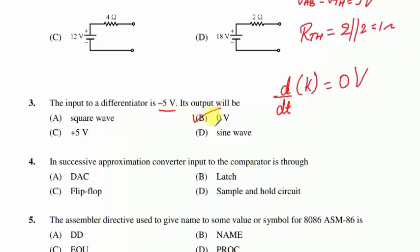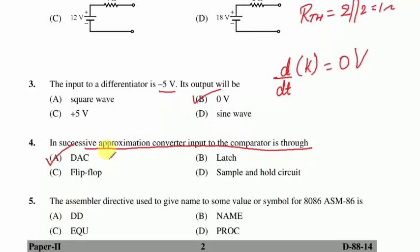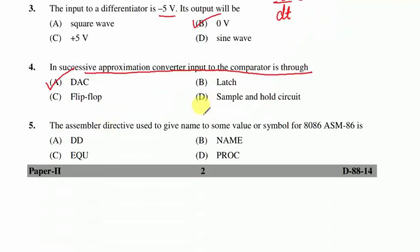Question 4 is based on successive approximation register type ADC. In a successive approximation converter, the input to the comparator is through a digital-to-analog converter (DAC). Question 5 is based on microprocessor 8086 — the assembler directive used to give a name to some value or symbol.